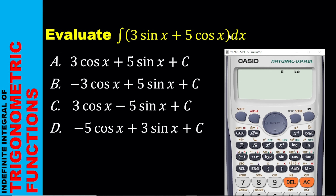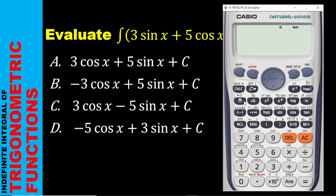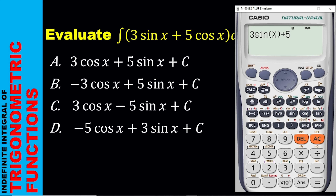The first thing to do is enter the expression you see in the question on the calculator, but you are not adding the integral sign and the dx. You are just writing what you see in the expression. So, 3 sin x plus 5 cos x should be entered on the calculator. I enter 3 sin x — sin has opened a bracket, so you put the x there, after which you must close this bracket. Then I have plus 5, and then you add the cos x. The cos has brought a new bracket, so after adding the x, remember to close this bracket.